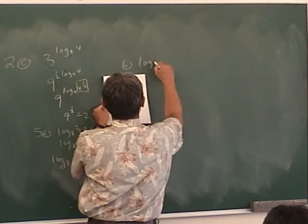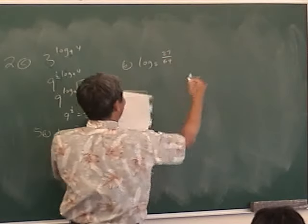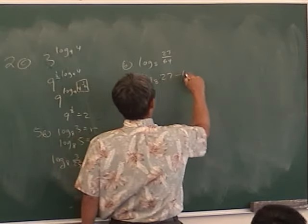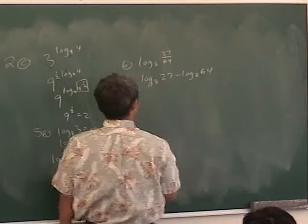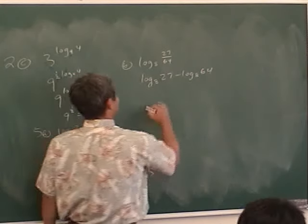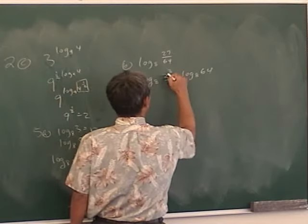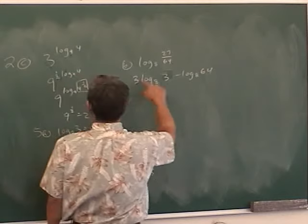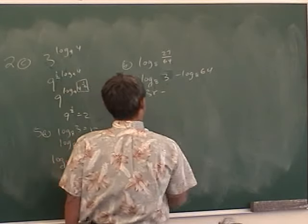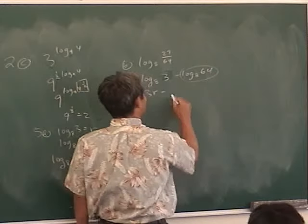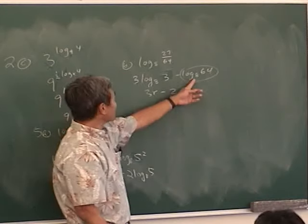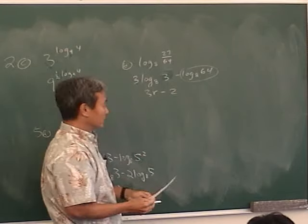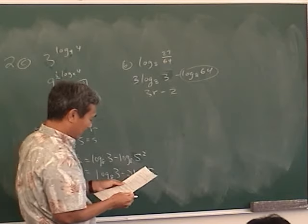Part B. Log base 8 of 27 over 64. Now, this one's a fraction already. So using your properties of logarithms, this is log base 8 of 27 minus log base 8 of 64. What am I going to do with that? Okay, change 27 to 3 cubed, so you can put the 3 in the front. Because that's 3 and this is R, so 3R. And you know what the other class said? Yeah, but how do you figure out this one, Mr. Park? It's 2. Because what does this mean? This means 8 to what power equals 64. It's 2.